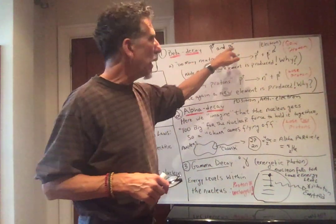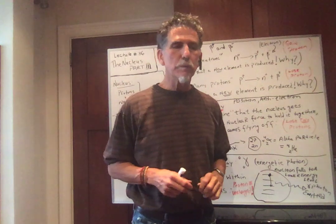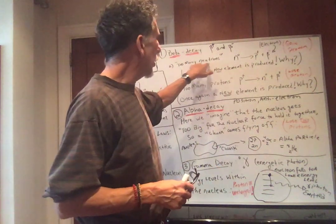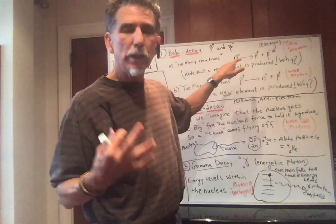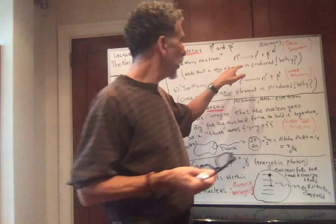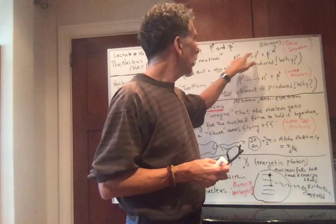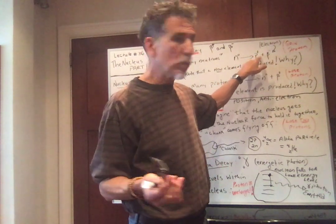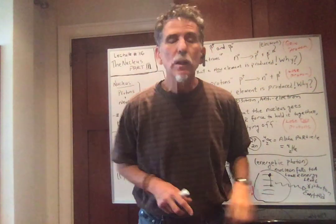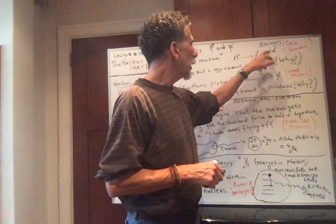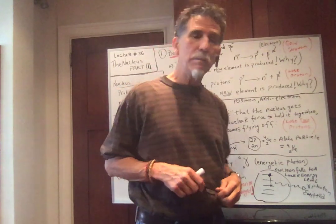We're going to first talk about beta decay — positive and negative beta decay. Suppose a nucleus has too many neutrons. A neutron, which has zero charge, can only change to a proton — conservation of nucleon number. But we start with zero charge, and conservation of electric charge means we cannot finish with a positive charge, so we create a negative particle. This negative particle is called a negative beta particle; it turns out it's just a very energetic electron.